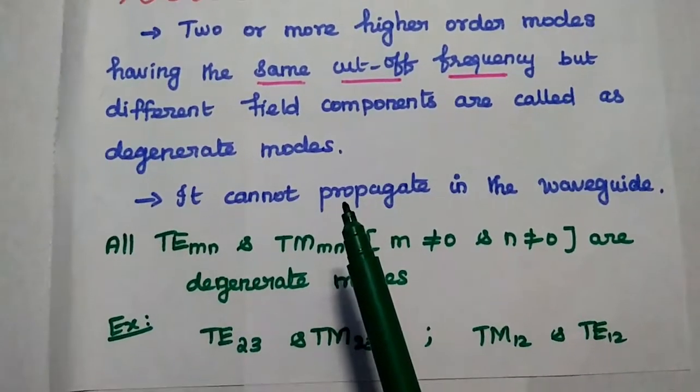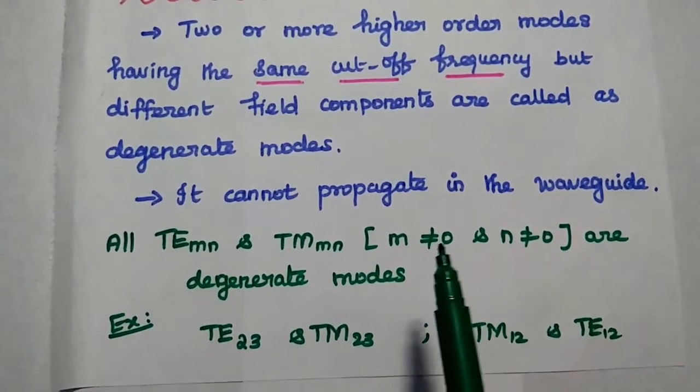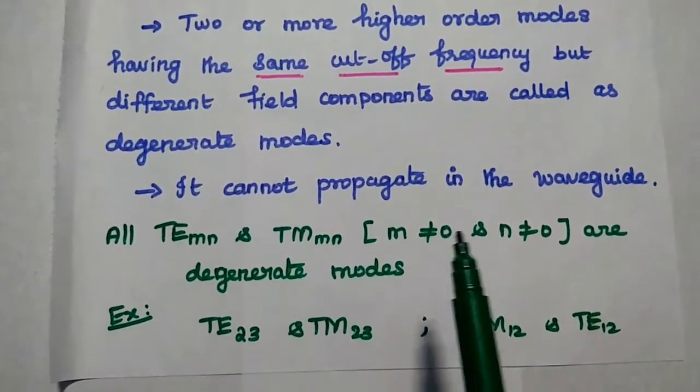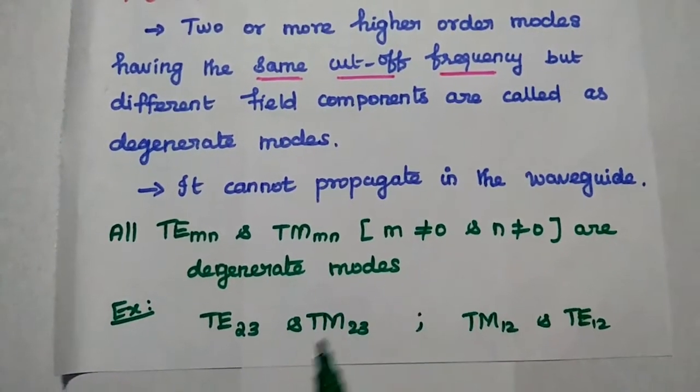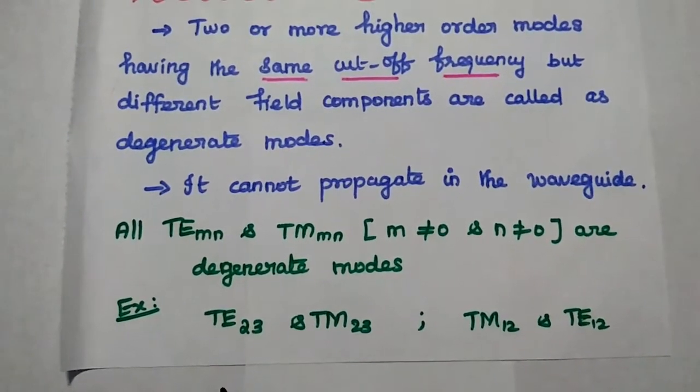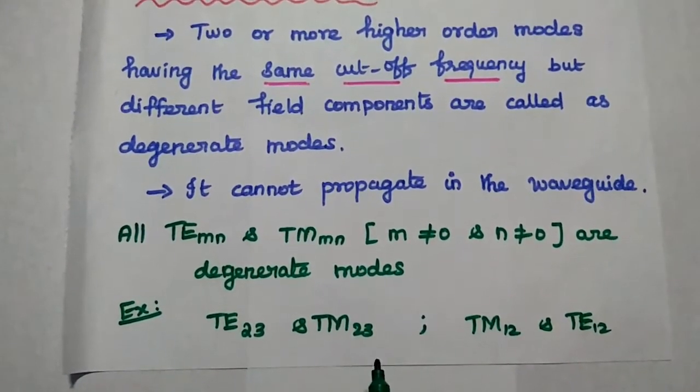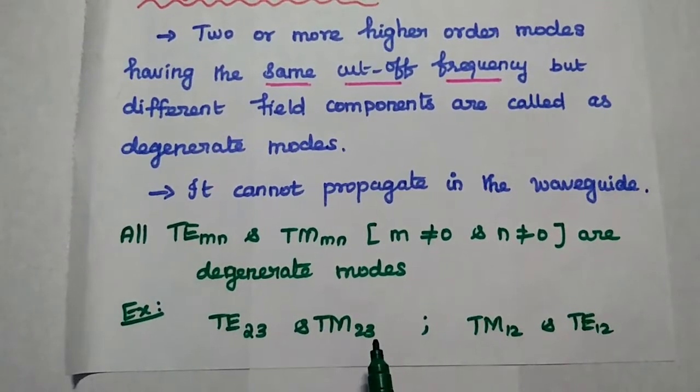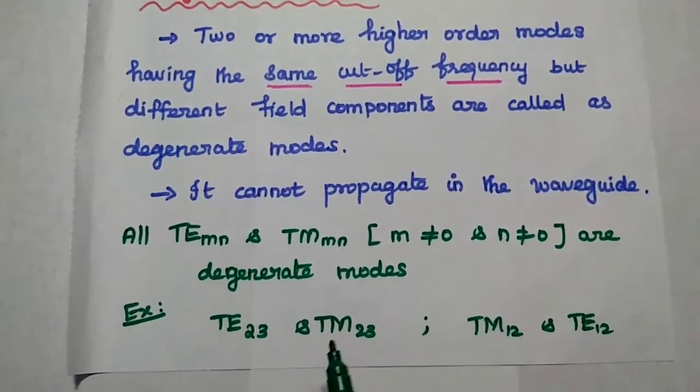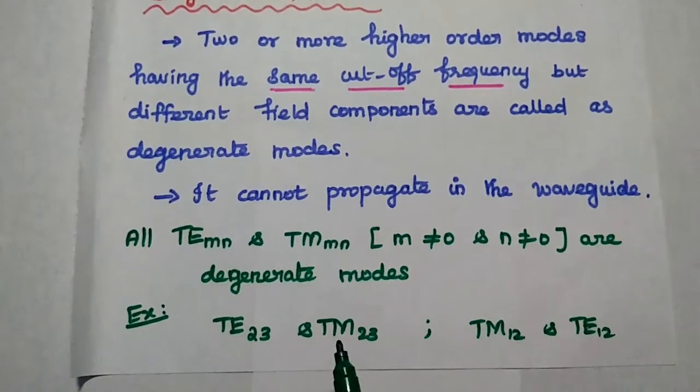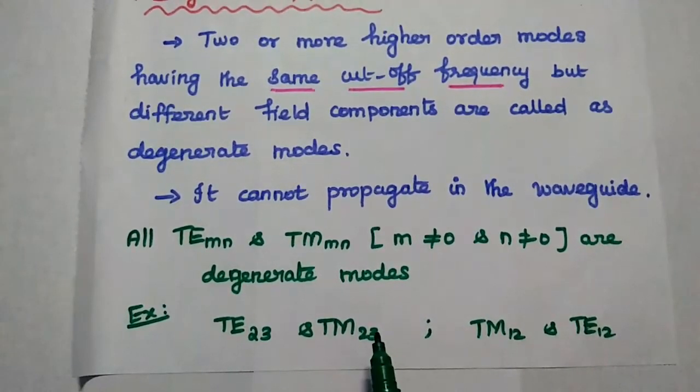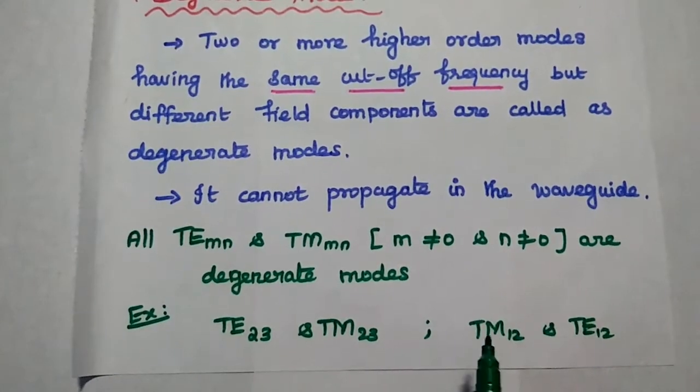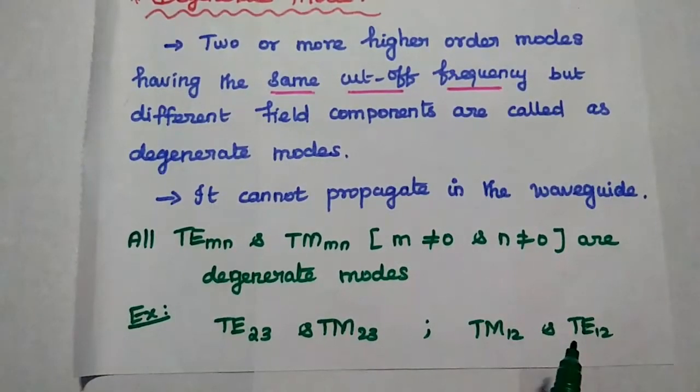All TEmn and TMmn with a condition M is not equal to 0 and N is not equal to 0 are degenerate modes. For example, TE23 and TM23. These two modes have the same cutoff frequency with different field components, so these two are degenerate modes which cannot propagate in the waveguide. Similarly, TM12 and TE12.